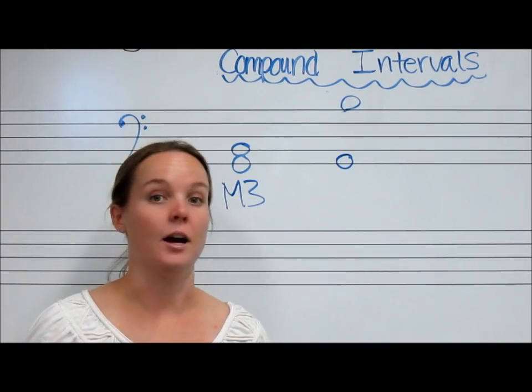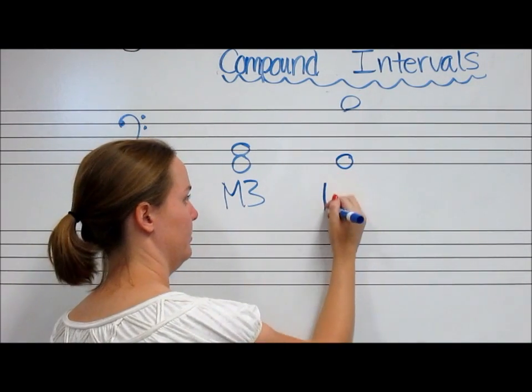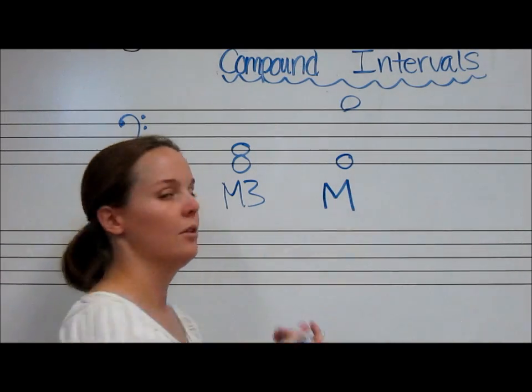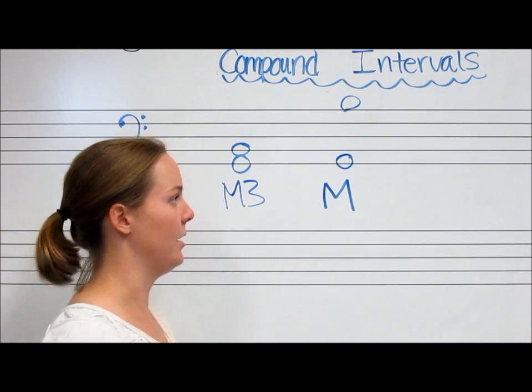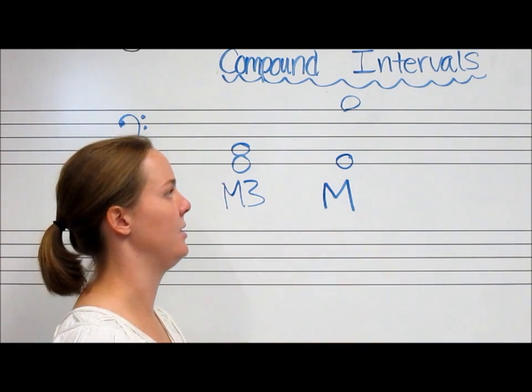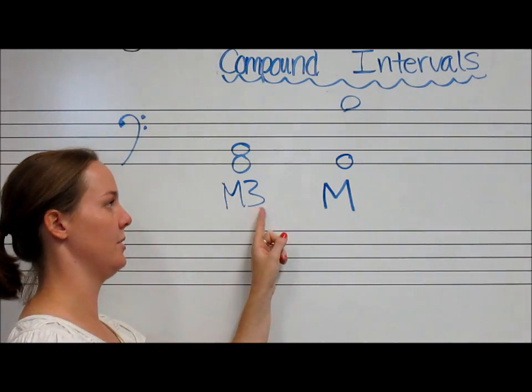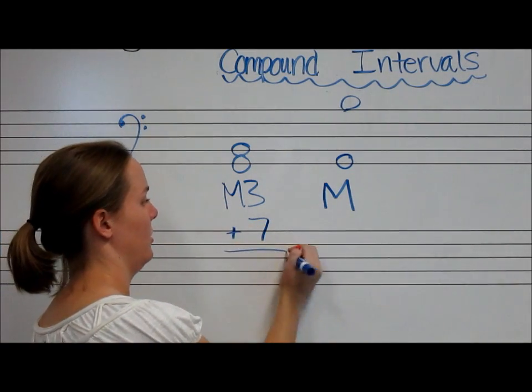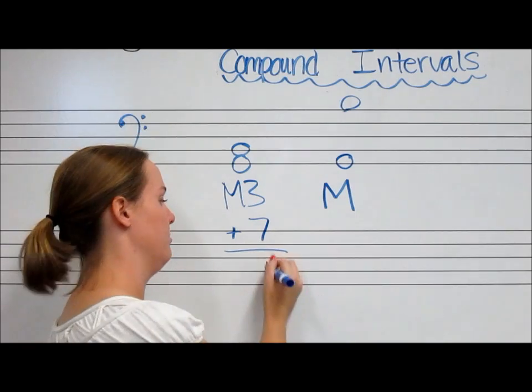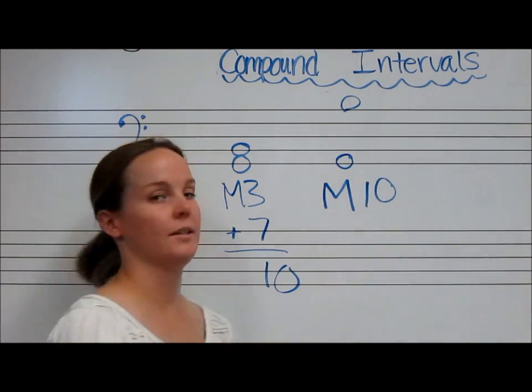The quality does not change, it's still major. The quantity, however, is going to change. Obviously, your distance is greater. And so, to get the correct quantity, all you have to do is add 7 to this number. So, 3 plus 7 is 10. So, we have a major tenth.